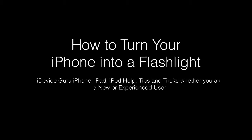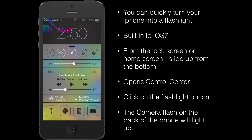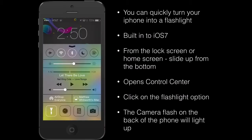Tip number six: I'm going to show you how to turn your phone into a flashlight. From the home screen, slide up from the bottom to open Control Center. In the bottom left you'll see a flashlight icon — click on that and the flash on the back of the phone will light up, letting you use your phone as a flashlight. A very quick and easy way of accessing that in iOS 7.